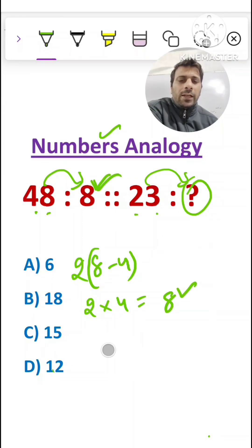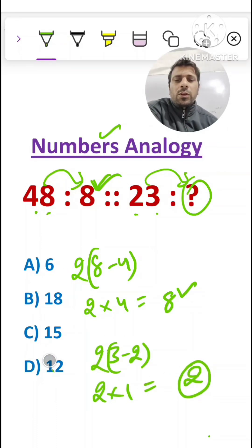In the same manner, take the digits of 23 and subtract. Take the subtraction, then we get 3 minus 2. Multiply it by 2. Then we get 2 times 1, which equals 2. There is no option having 2, that means this is not correct. We have to think differently.